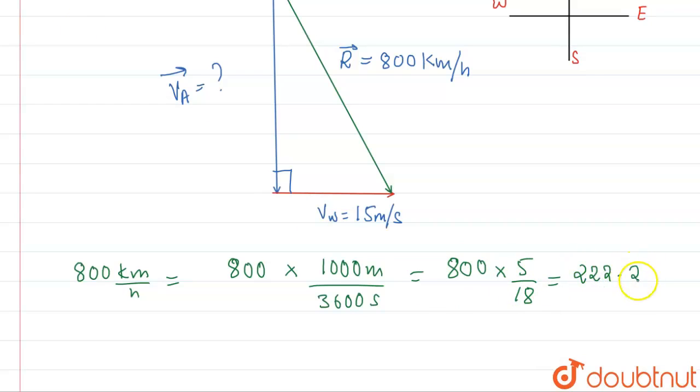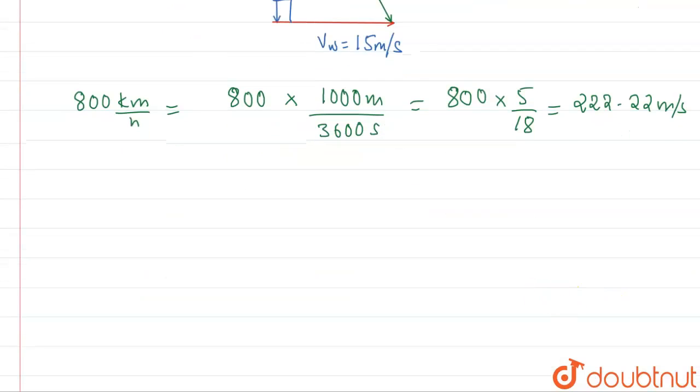222.22 meter per second. So now what we'll do? Now we'll calculate that is the vector which is velocity of aeroplane vector will be equal to what?